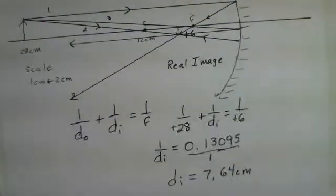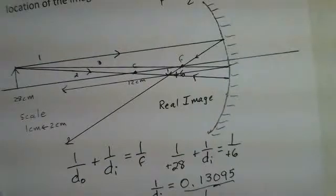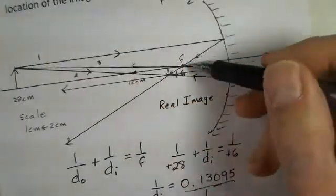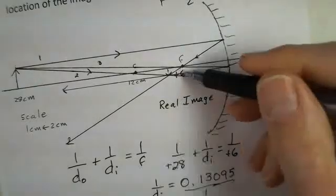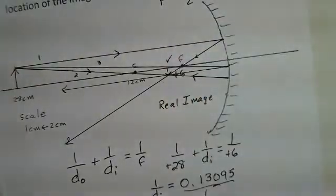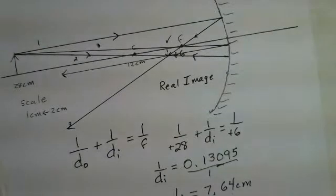Does that match the ray tracing? Well, 6 centimeters here is the focal point, 12 centimeters out here. So we're just a little distance away from 6 centimeters. And I'd say we're confirmed that we found the location of the image.